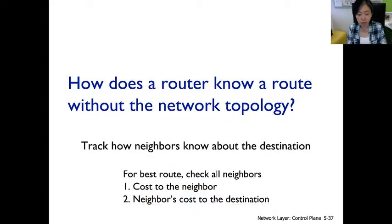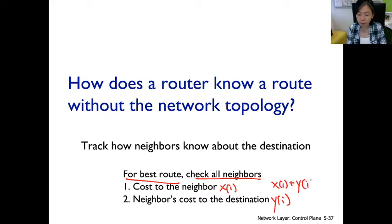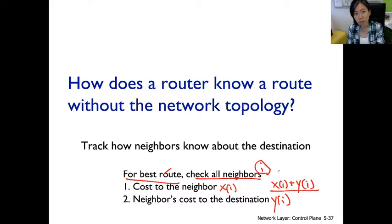To discover the best route to the destination, you check through all neighbors. For each neighbor, you find the cost to that neighbor and the cost from that neighbor to the destination. You sum x and y for each neighbor, and pick the neighbor i such that xi plus yi is the lowest. That gives you the best route, the shortest path. The neighbor i is the next hop that leads to the shortest path to the destination.